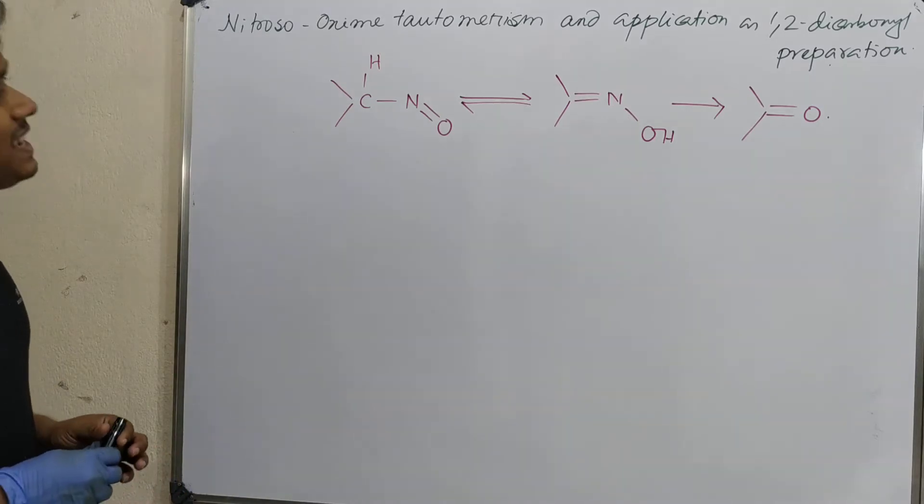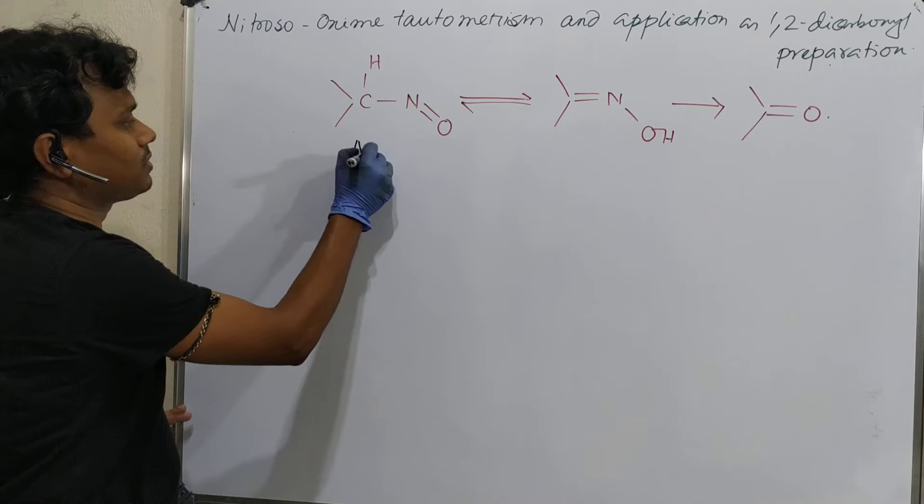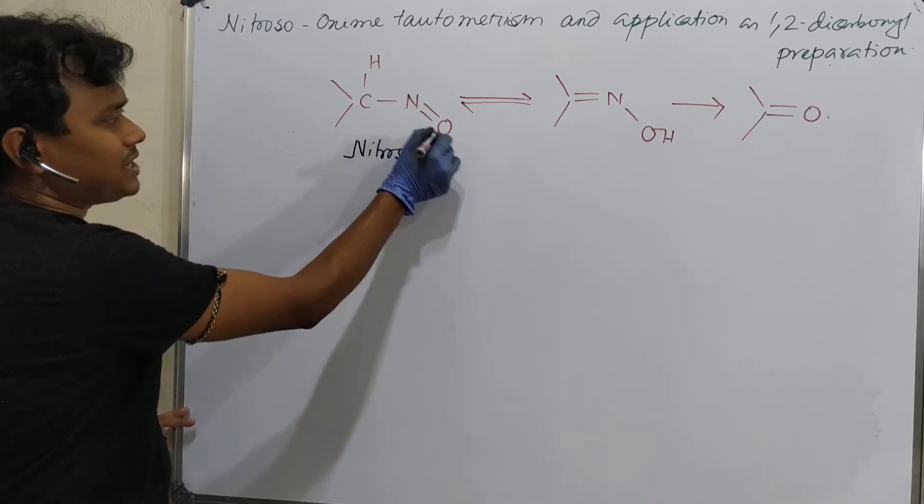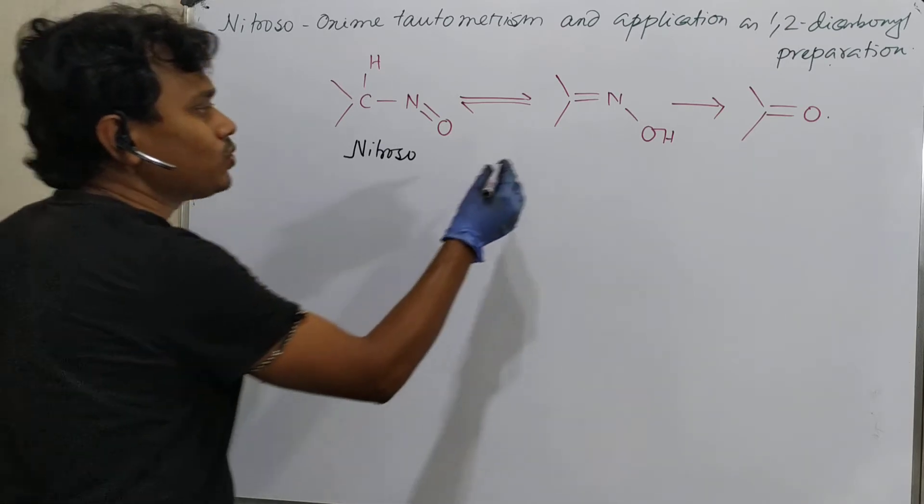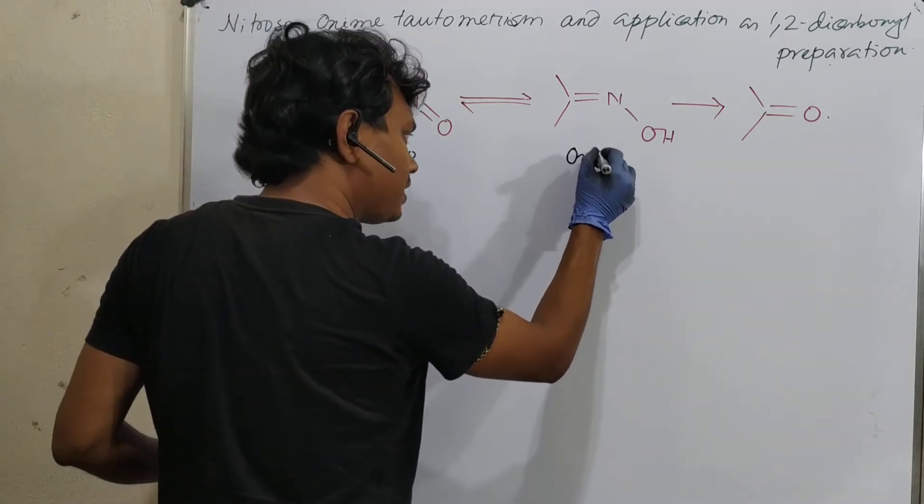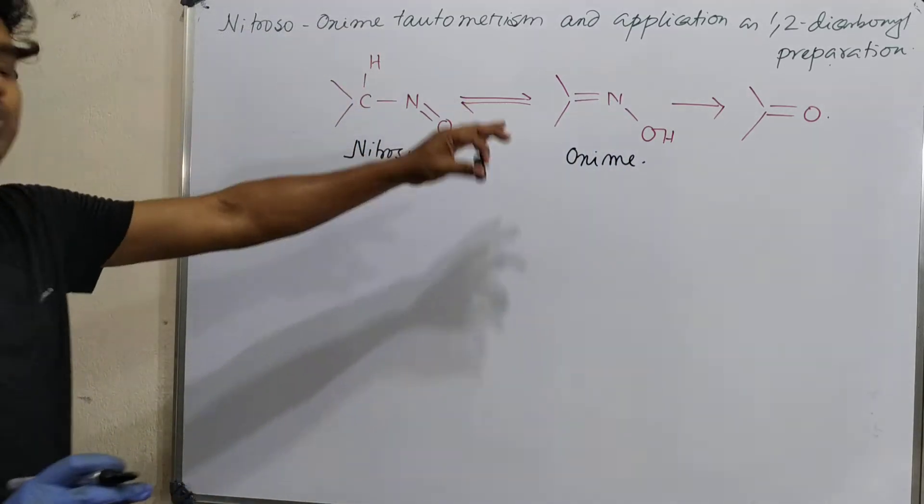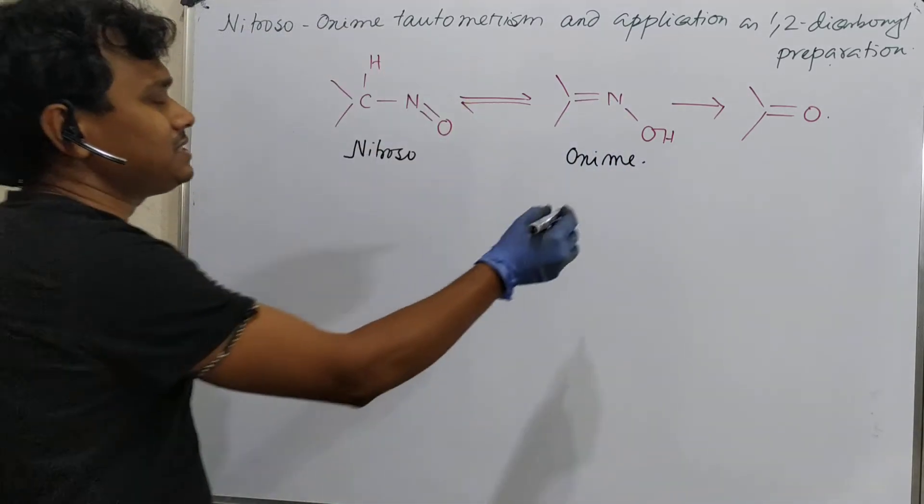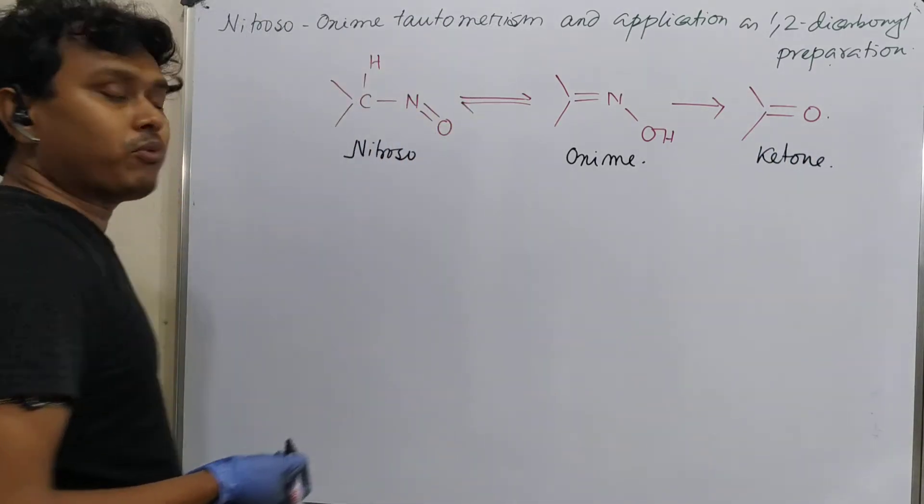See, this is known as nitroso compound. Why? Because nitroso group is attached to this. And this is known as oxime. I will come to everything. This is oxime. I will come how to prepare this thing in a different way. And this is ketone. This thing you know very well.